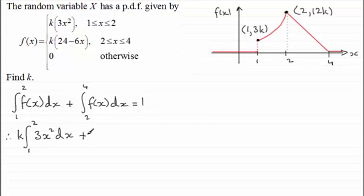Now, we've got the integral then of 3x squared with respect to x going between x equals 1 and x equals 2. And to this, we have to add k times the integral of 24 minus 6x. Put that in brackets because we've got a couple of terms there. Integrating that with respect to x between the limits x equals 2 and x equals 4. And all of that should come to 1.